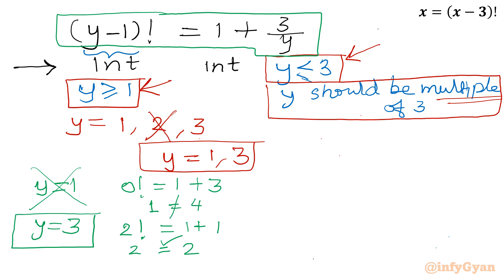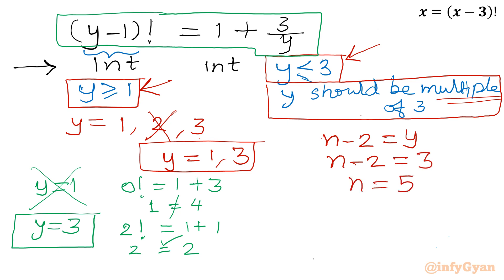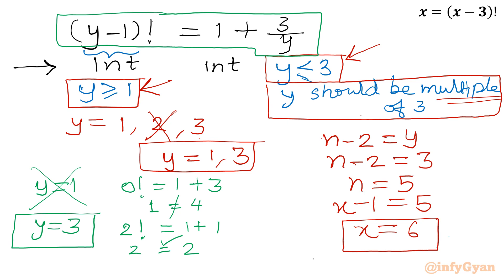Now let us find the value of x. From our substitution, n - 2 = y, so n - 2 = 3, giving n = 5. Since n was defined as x - 1, we have x - 1 = 5, so x = 6. This is our final answer. Thank you so much for watching, friends — do not forget to like, share, and subscribe.